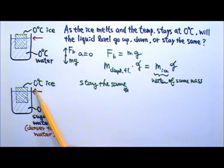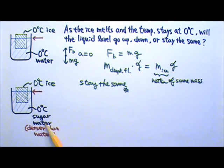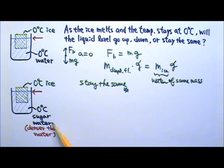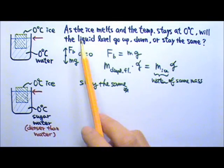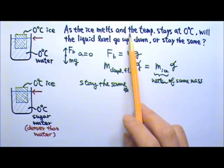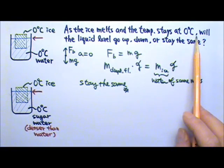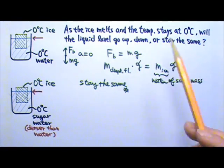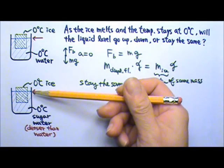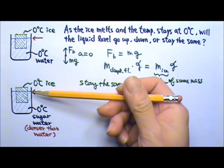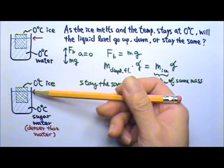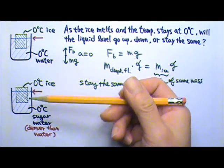What if it's 0 degrees Celsius ice in 0 degrees Celsius sugar water? Sugar water is denser than pure water. As the ice melts and the temperature stays at 0 degrees Celsius, will the liquid level go up, down, or stay the same?